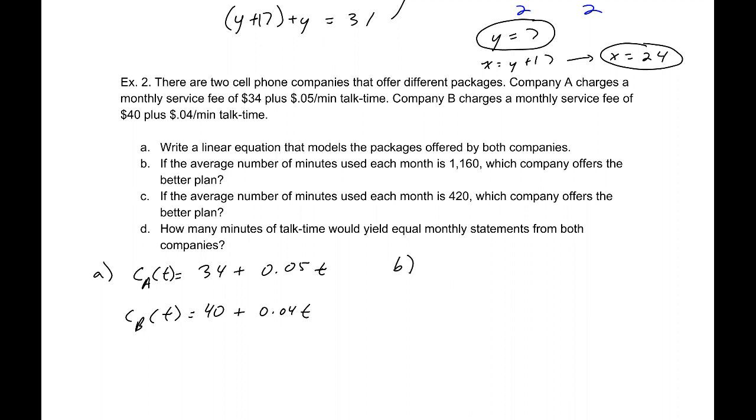Part B, if the average number of minutes used each month is 1,160, which company offers the better plan? Let's find the cost for company A of 1,160 minutes. That would be $34 plus 0.05 times 1,160, which would be $34 plus $58, which would be $92. So company A would cost $92.